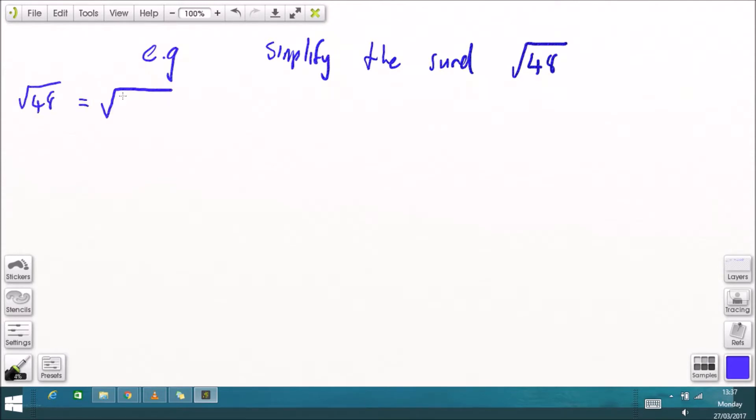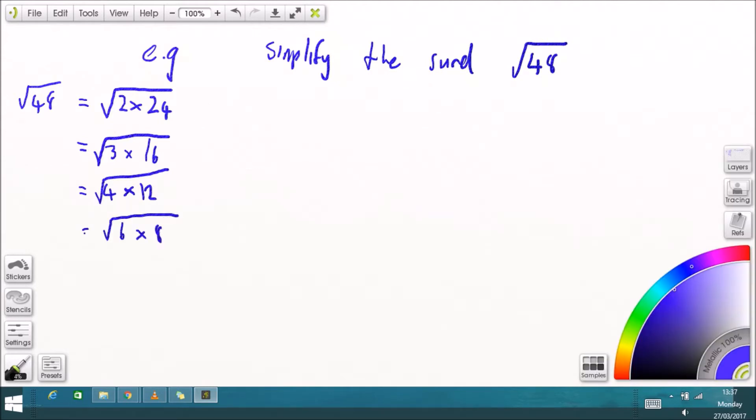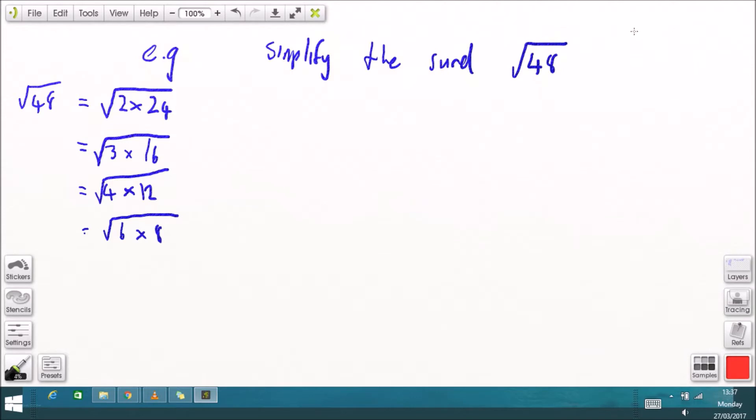Now if we take the square root of 48 as an example we want to simplify this surd. We can look for the square root of 48 to be square root of 2 times 24, 48 is 3 times 16 and 4 times 12 and 6 times 8.